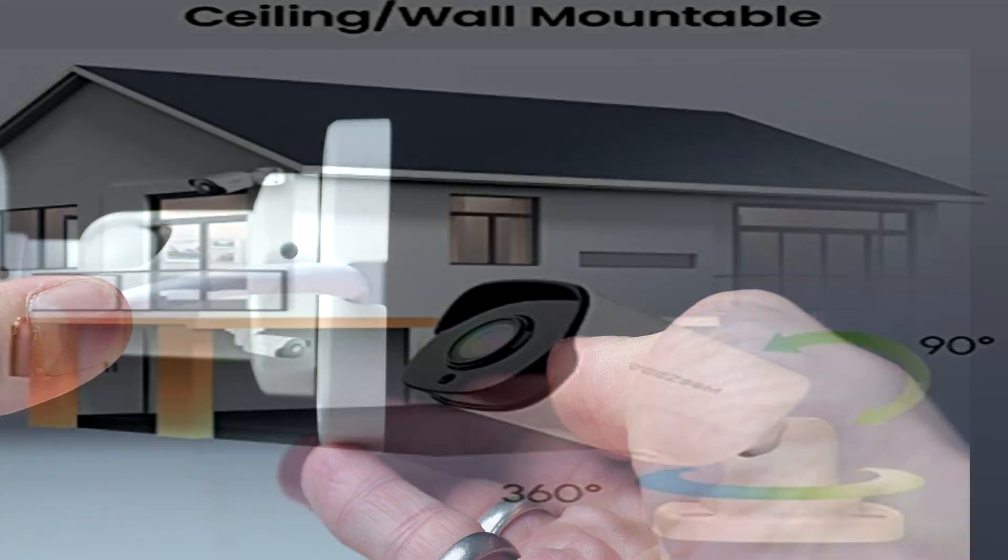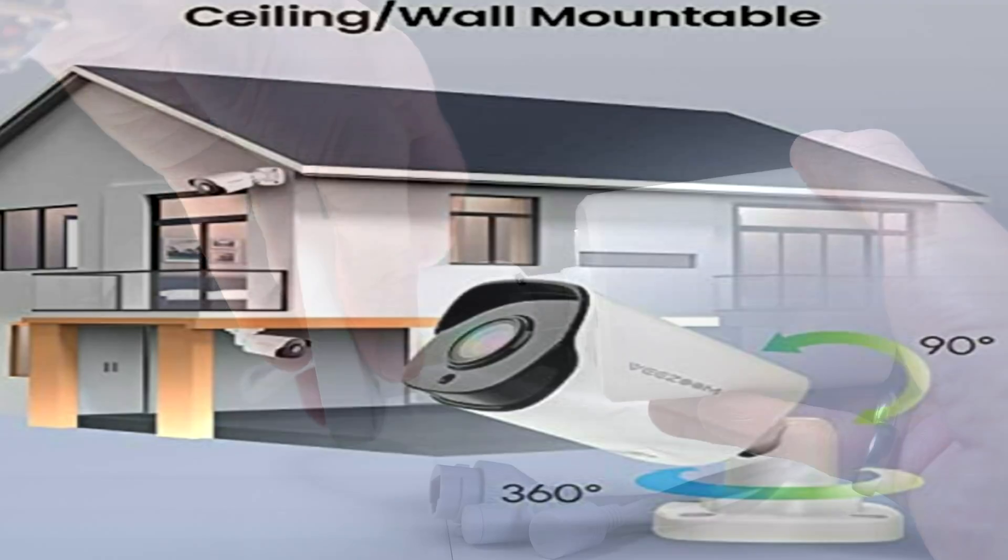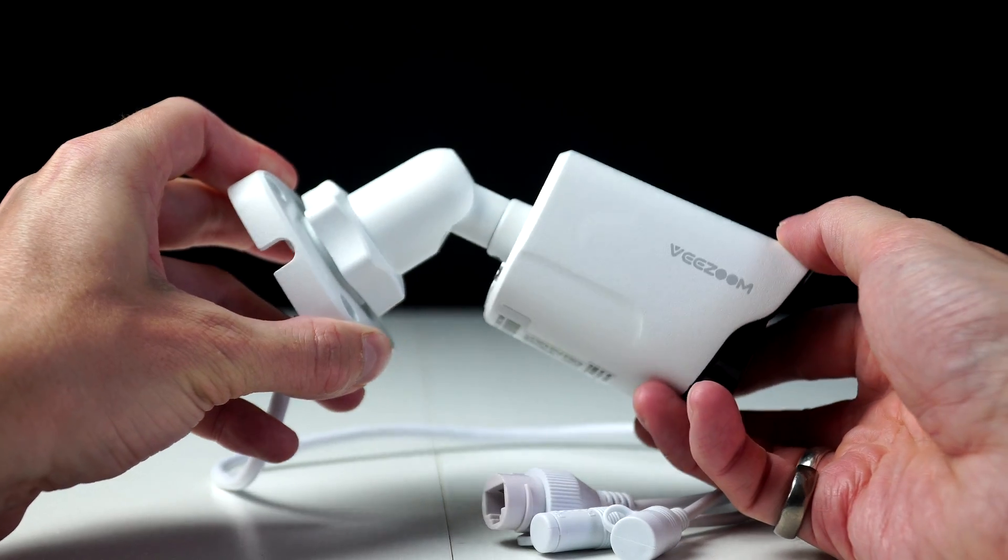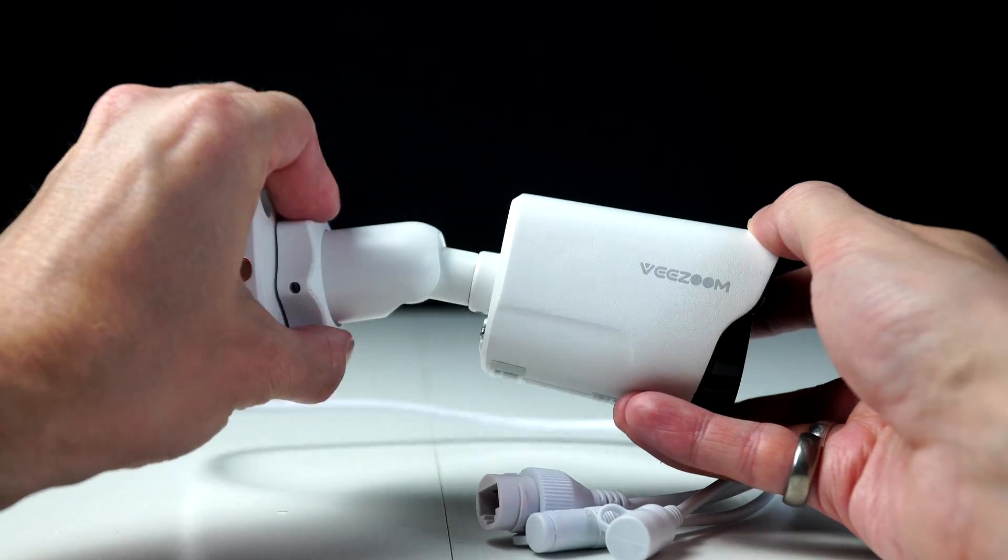Here we have a little slot, which you can rotate around to have the cable go up, down, left or right. To move this camera around, you just twist the back end, which will loosen it. Then we can adjust in many different directions.